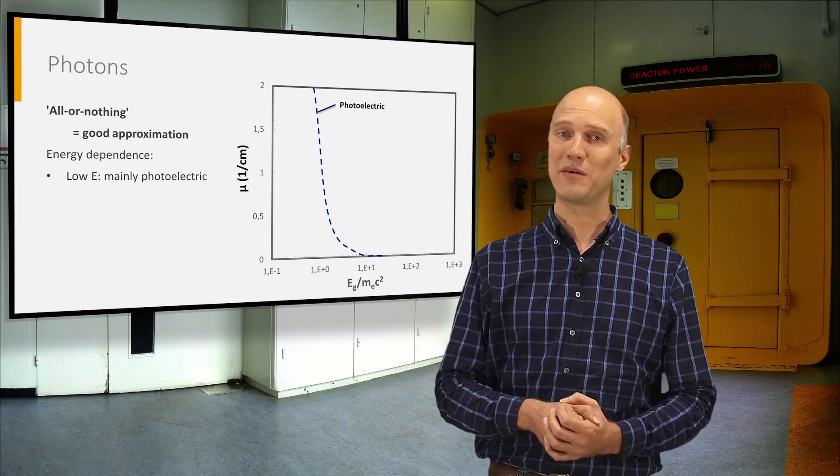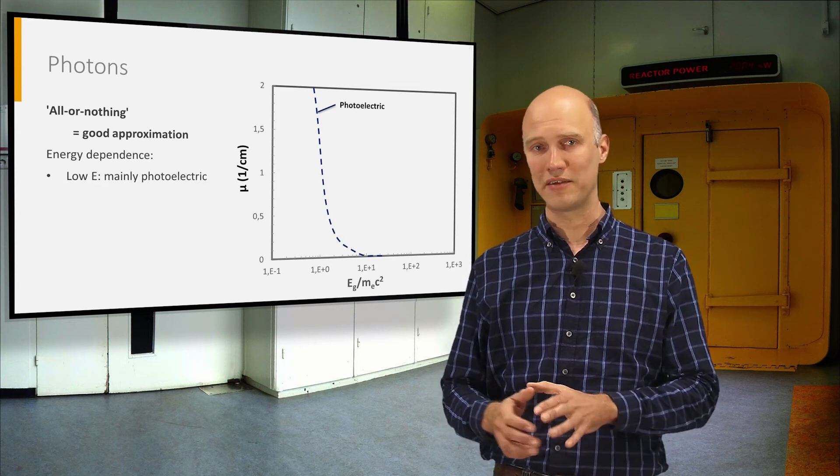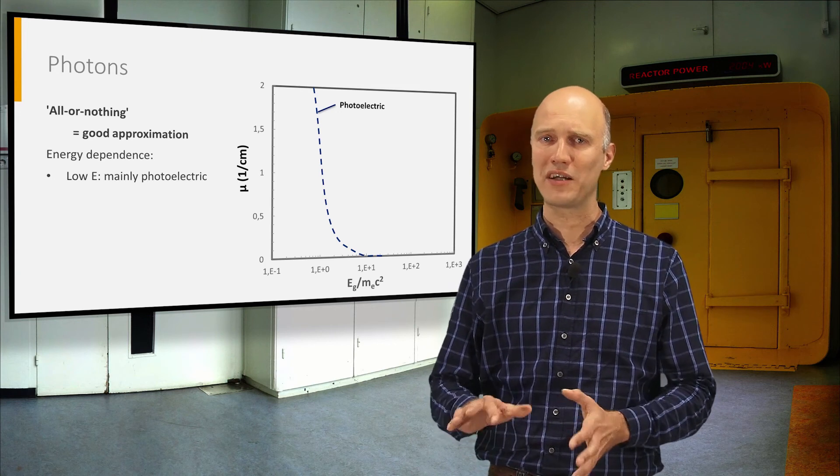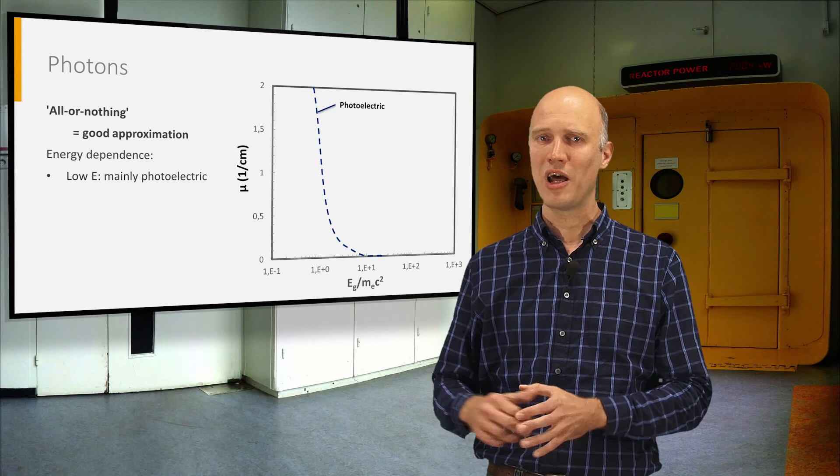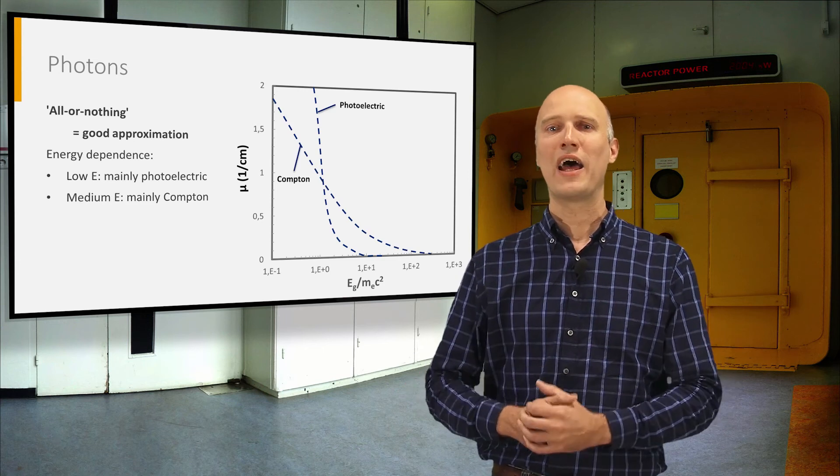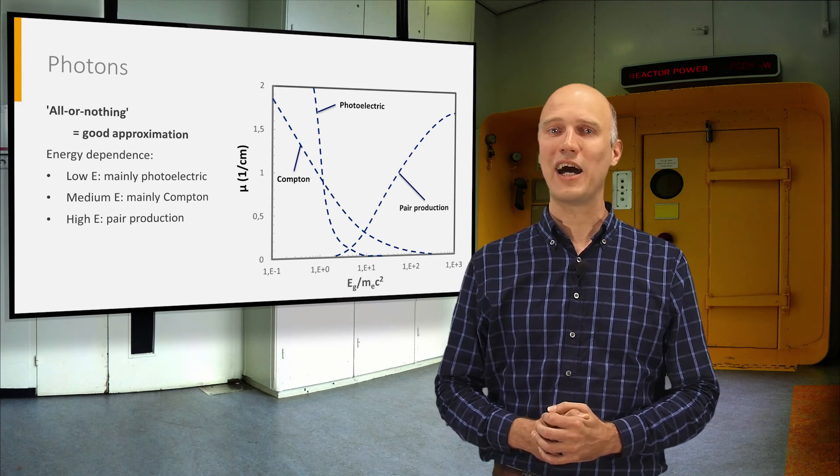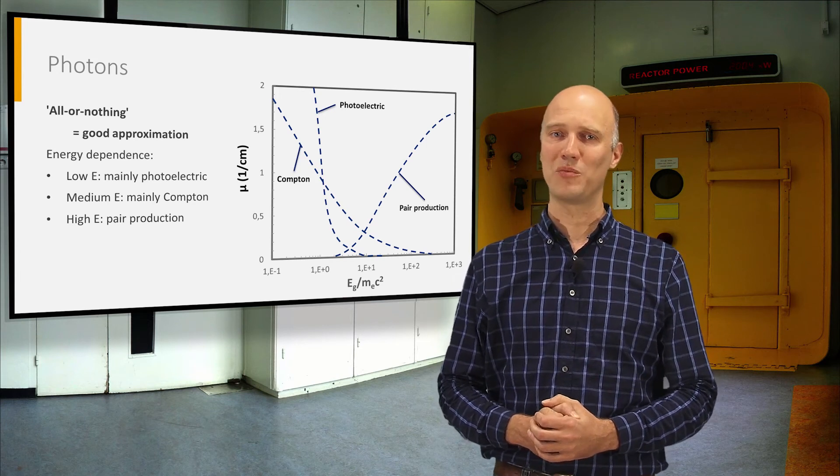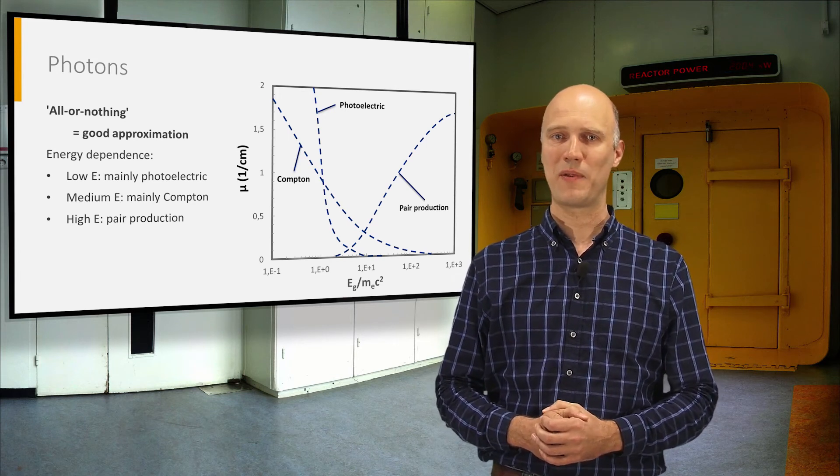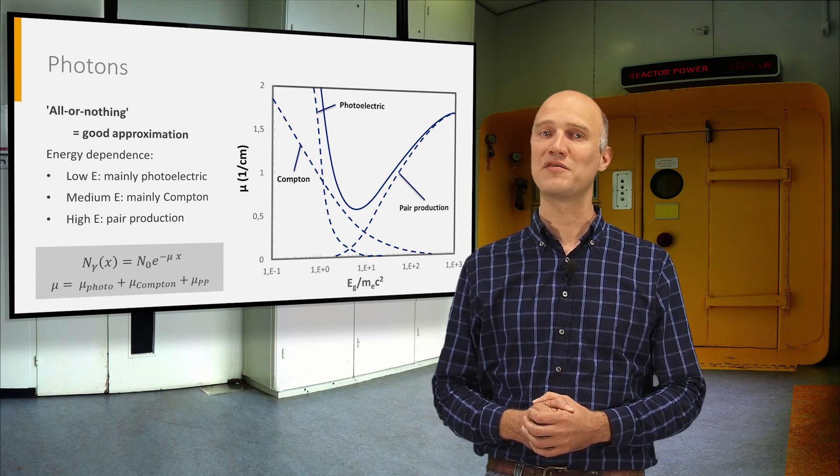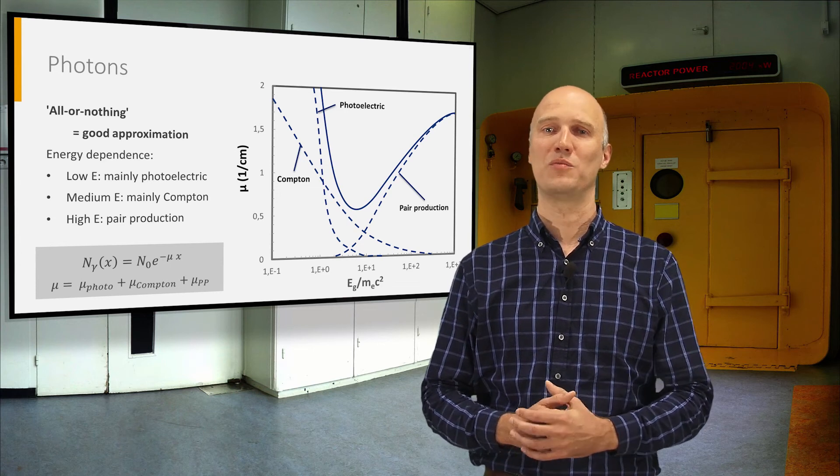The photoelectric effect will dominate at lower energies. At these energies, the Compton effect is rather small in comparison, but it becomes more important at intermediate energies. For sufficiently high energies, pair production becomes the dominant process. The attenuation coefficient mu for photons can thus be written as a sum of three terms.